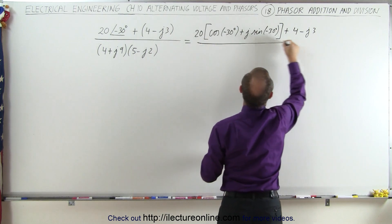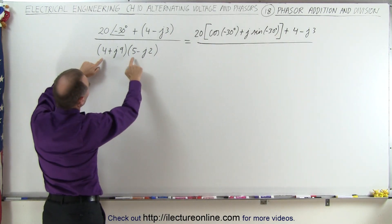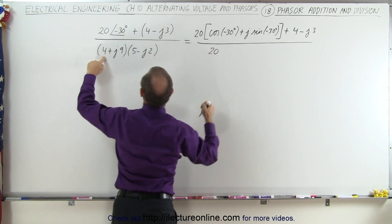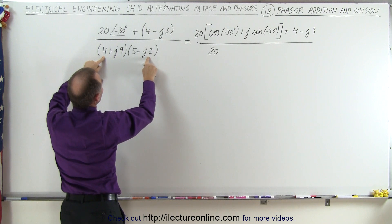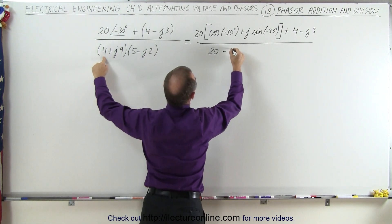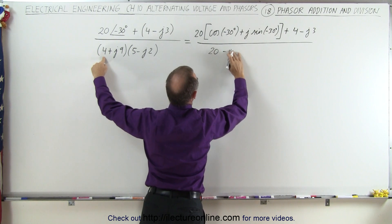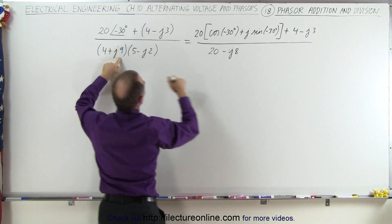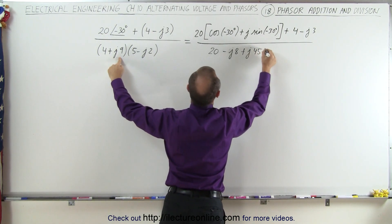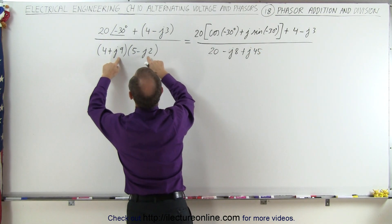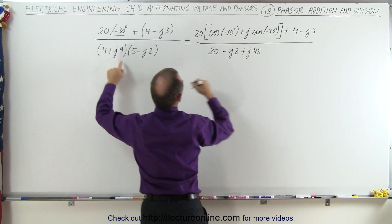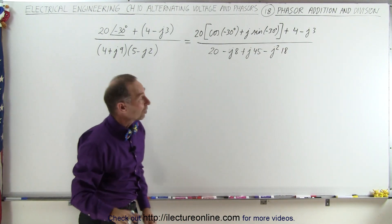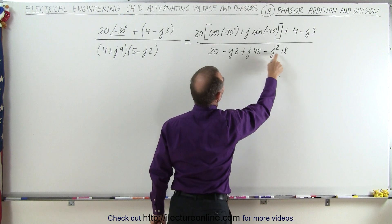In the denominator, let's go ahead and multiply these two complex numbers together. We first multiply the real numbers together: 4 times 5, that gives us 20. And then we have 4 times minus j2, that would be minus j8. Then multiply to get plus j times 45. And then multiply those two together, we get minus j squared times 18. Now, j squared is going to be negative 1, so that turns this into a positive 18.